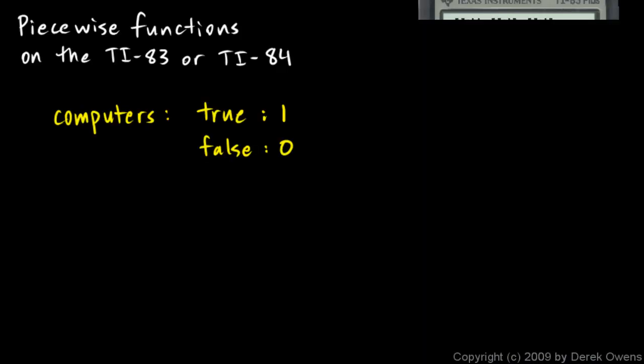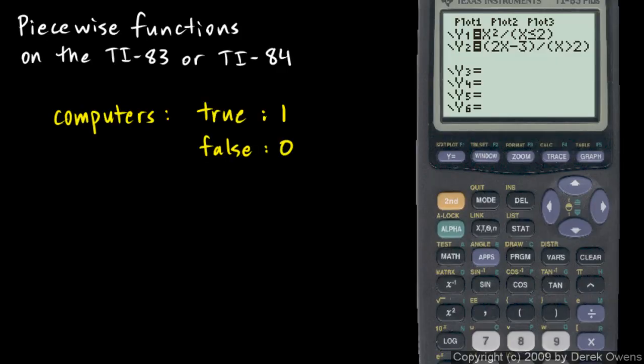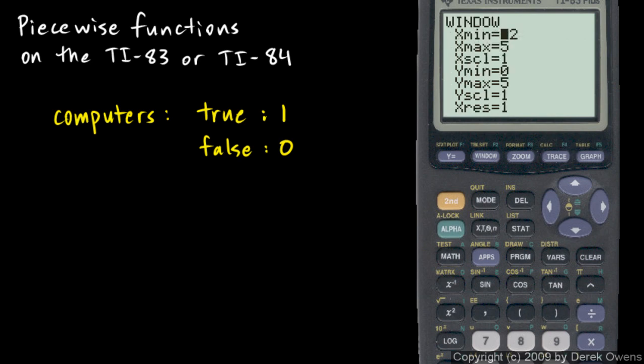Let's go ahead and set our window. Set our window and graph this. I'm going to hit window. I'm going to make my x values go from negative 5 to positive 5 with a scale of 1. And the y values are also going to go from negative 5 to positive 5. And those are basically the same viewing window that we had on our graph earlier, in the earlier example.